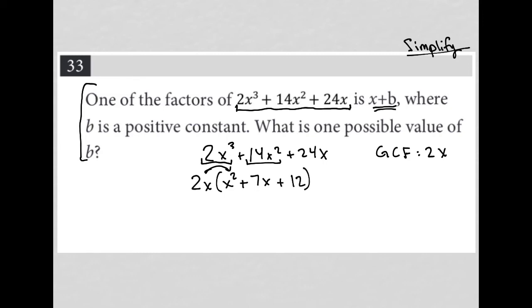So I have 2x times x² + 7x + 12. And then the question is, can I factor this even further? I have this trinomial here. Are there 2 factors of 12 that add up to 7? That's what we typically initially look for when we're factoring a trinomial.